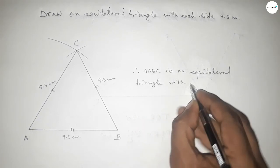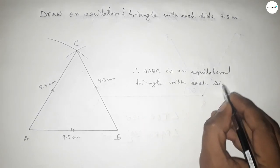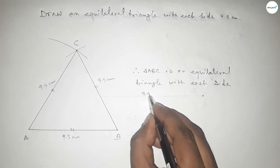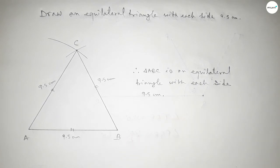So this is the process to construct an equilateral triangle with each side 9.5 centimeter. That's all, thanks for watching. If this video is helpful to you then please share it with your friend. Thanks for watching.